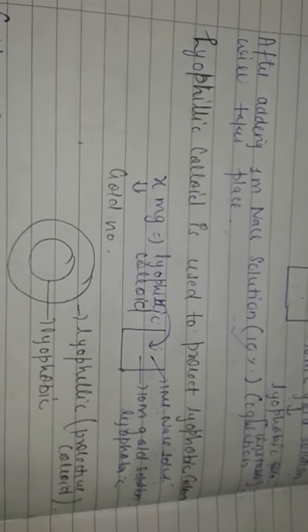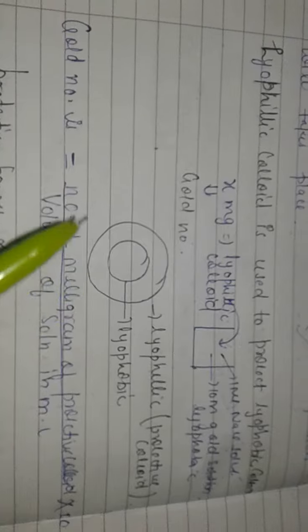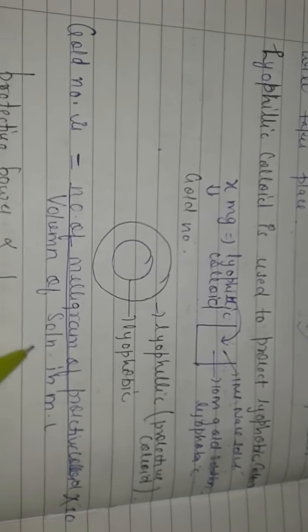The gold number formula is: number of milligrams of protective colloid into 10 upon volume of solution in ml. Also, protective power is inversely proportional to gold number.